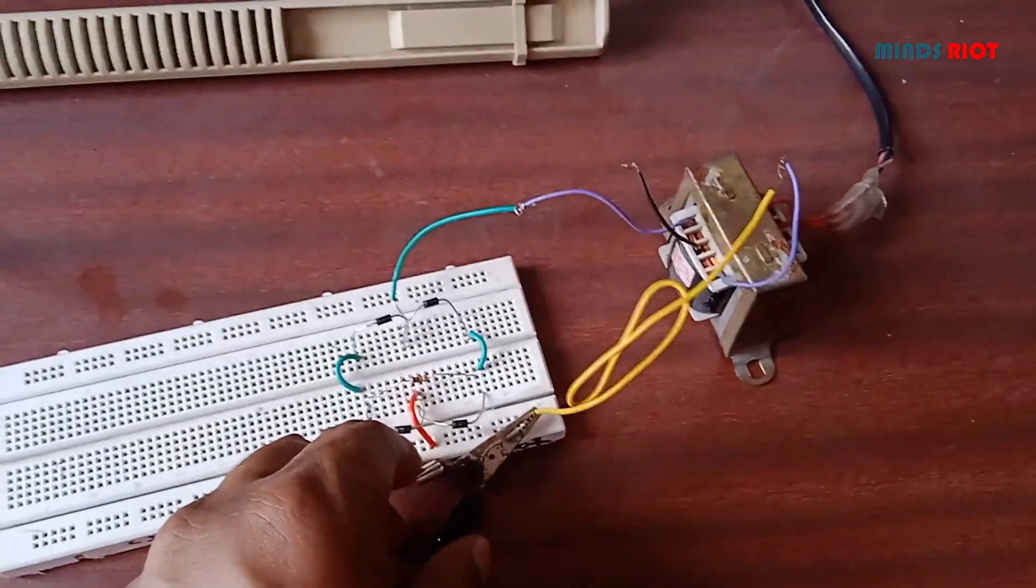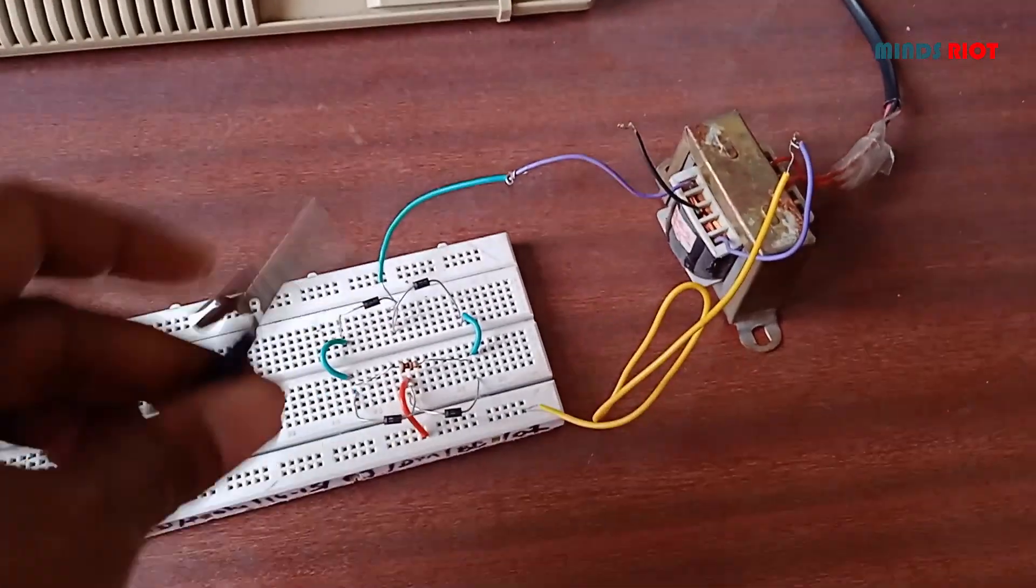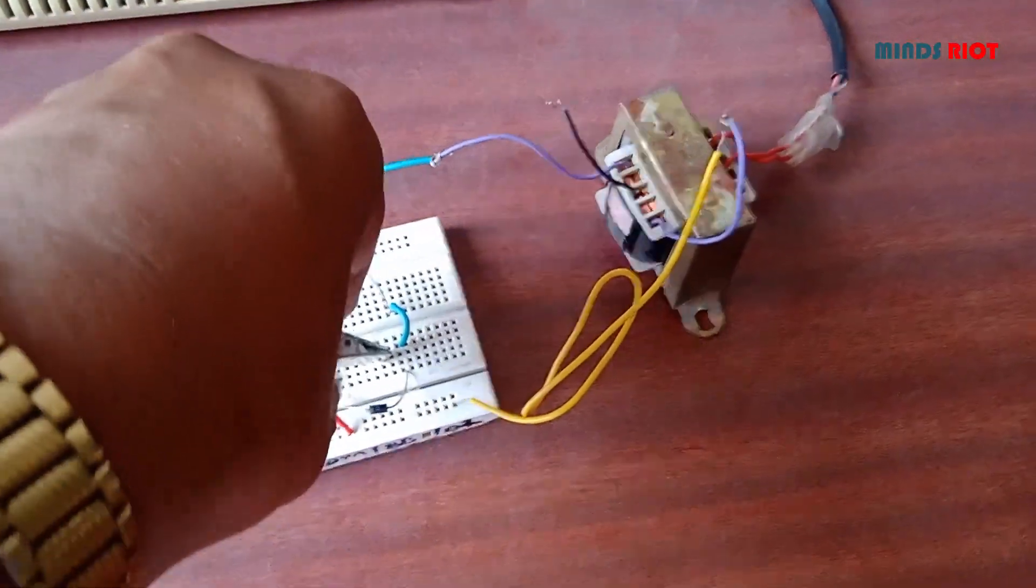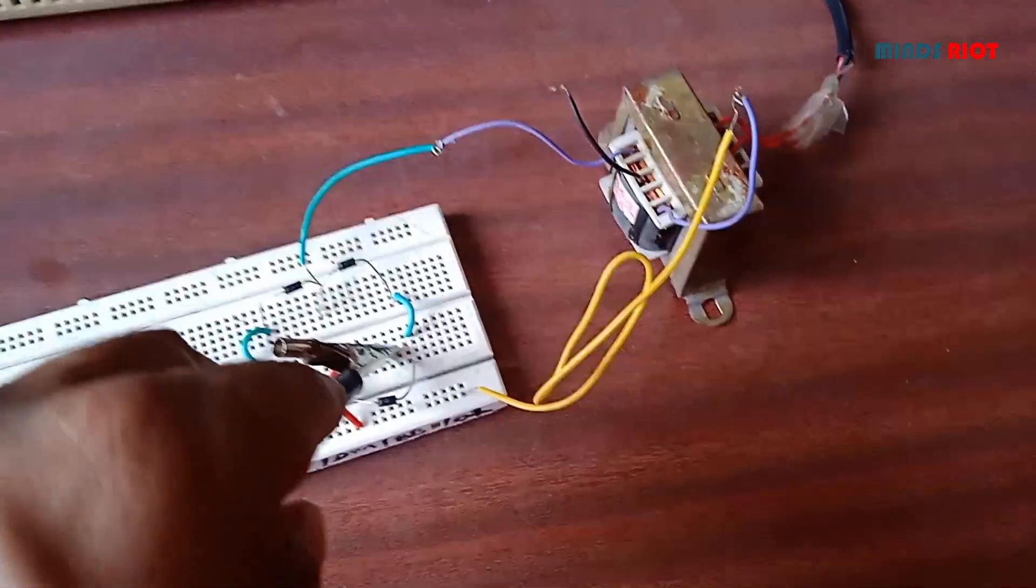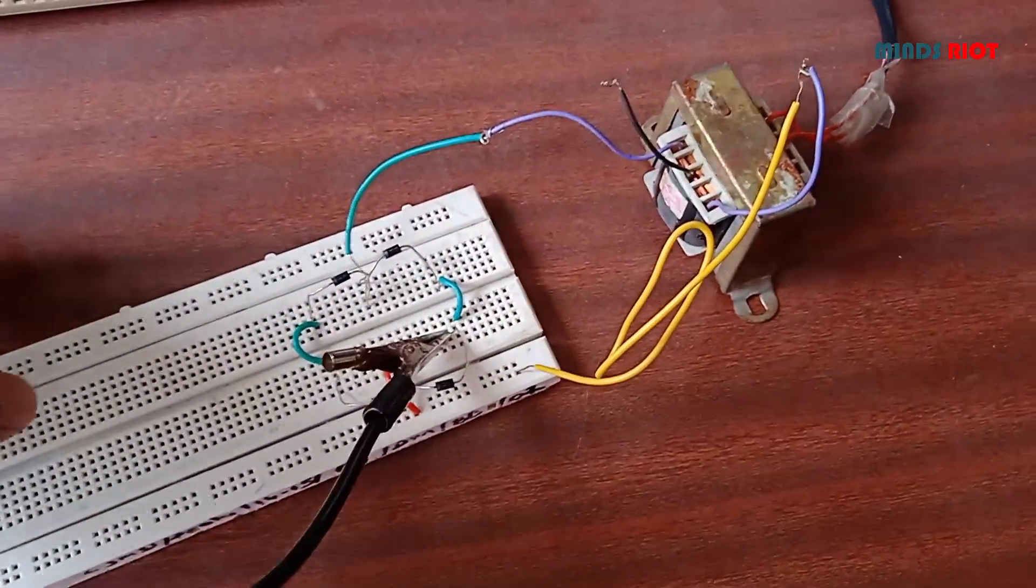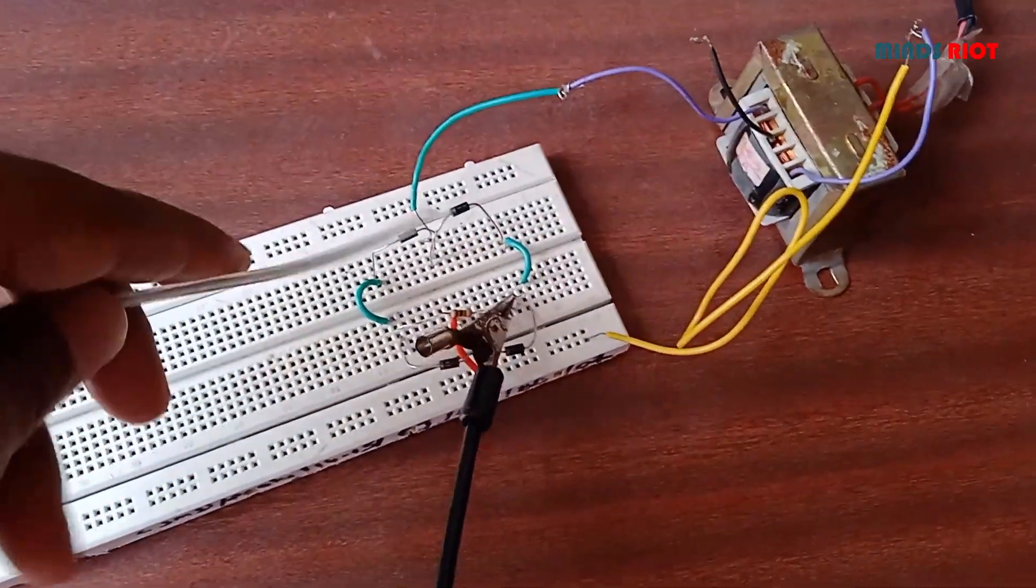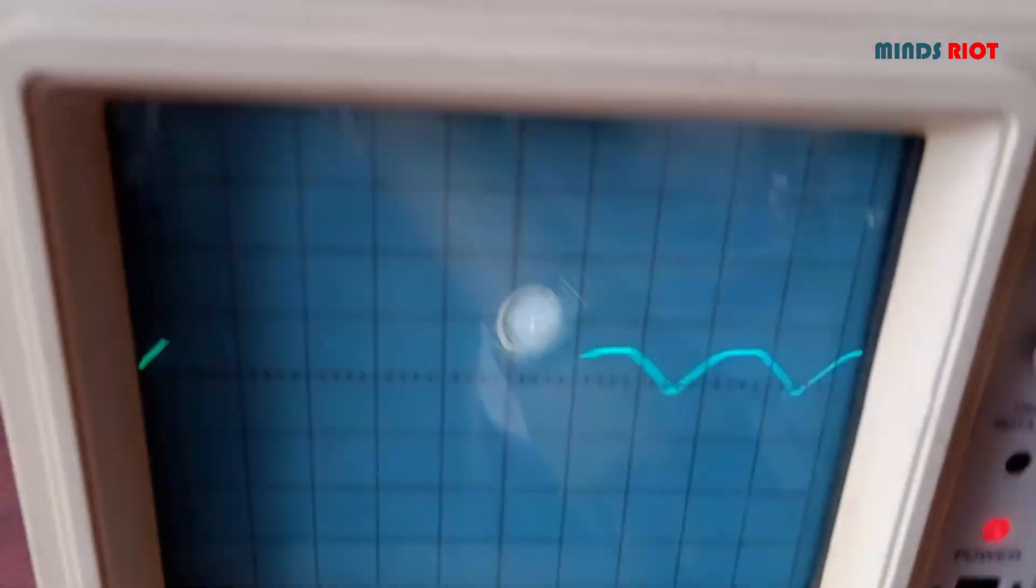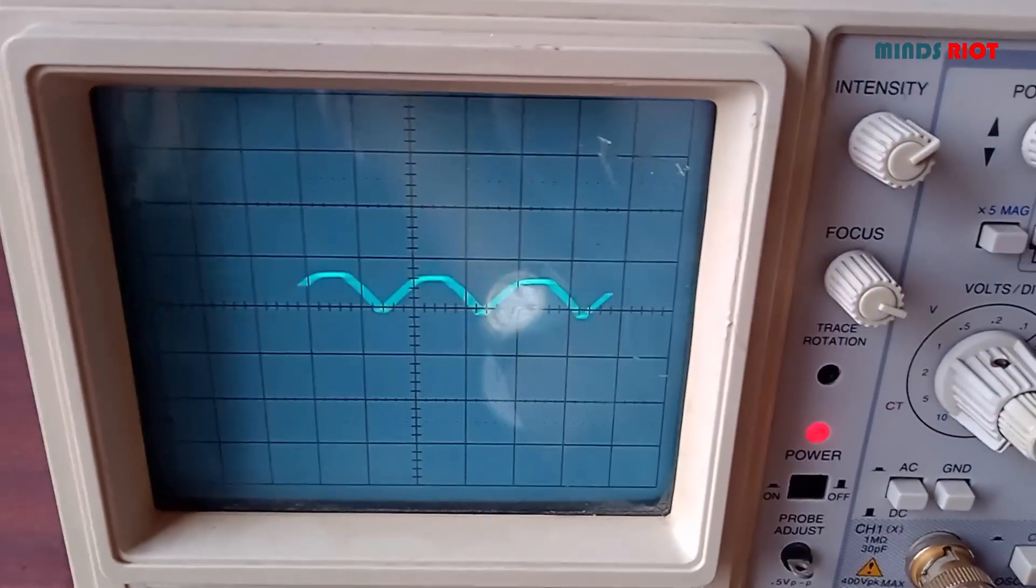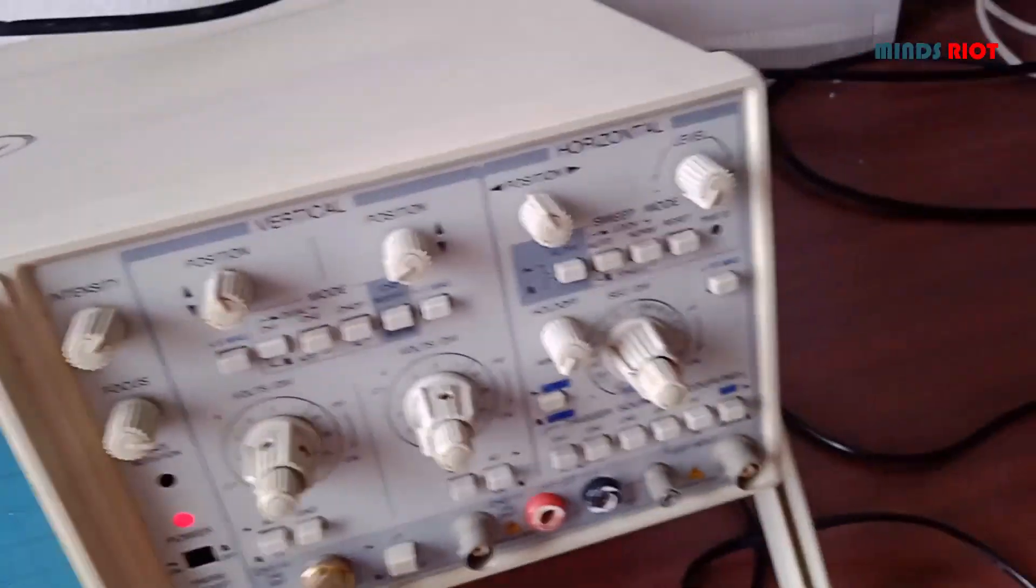To see the output we must connect CRO probe across load resistor. Connecting CRO probe across load resistor, and this is the rectified DC output of bridge rectifier.